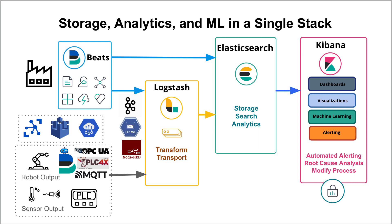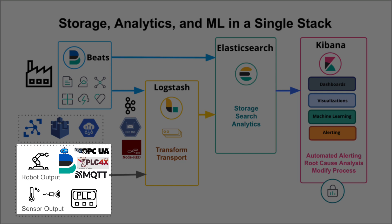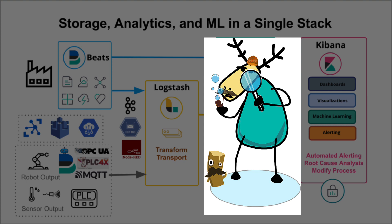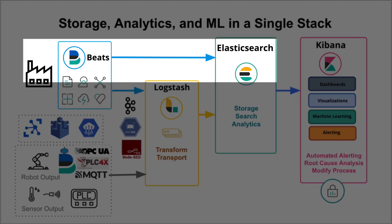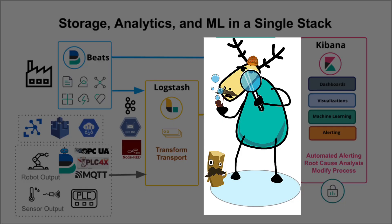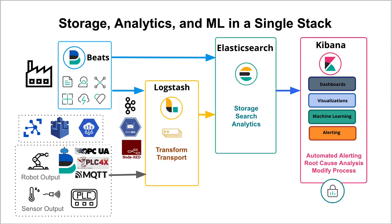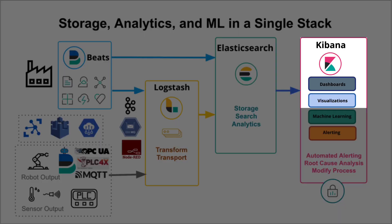Elasticsearch supports this complete process. Connectors let you ingest sensor data from many sources, including real-time protocols like MQTT and OPC UA. We are not using Logstash here as typical — instead, MachineBeats, which is able to ingest process data using the MQTT protocol. A link to its GitHub repo is included below. Then visually analyze the data and build monitoring dashboards using our data analytics tool, Kibana.